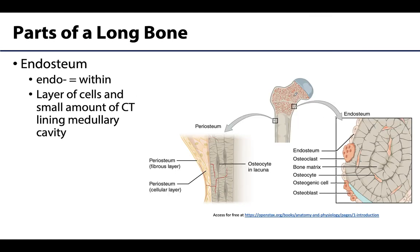The last structure to review regarding a long bone is the endosteum — a thin membrane of cells and some connective tissue that lines the medullary or marrow cavity. It is composed of three out of the four types of bone cells, except for osteocytes, which are trapped within the calcified extracellular matrix. The endosteum contains osteoclasts, osteogenic cells, and osteoblasts.